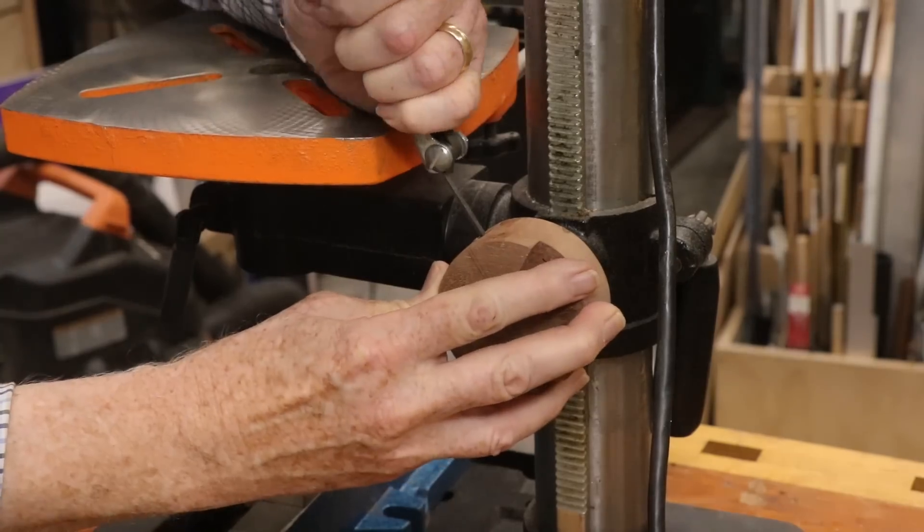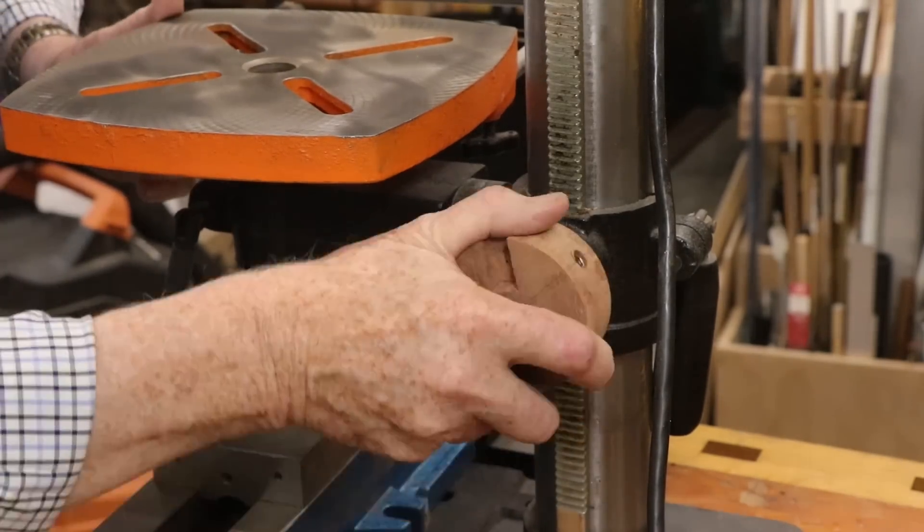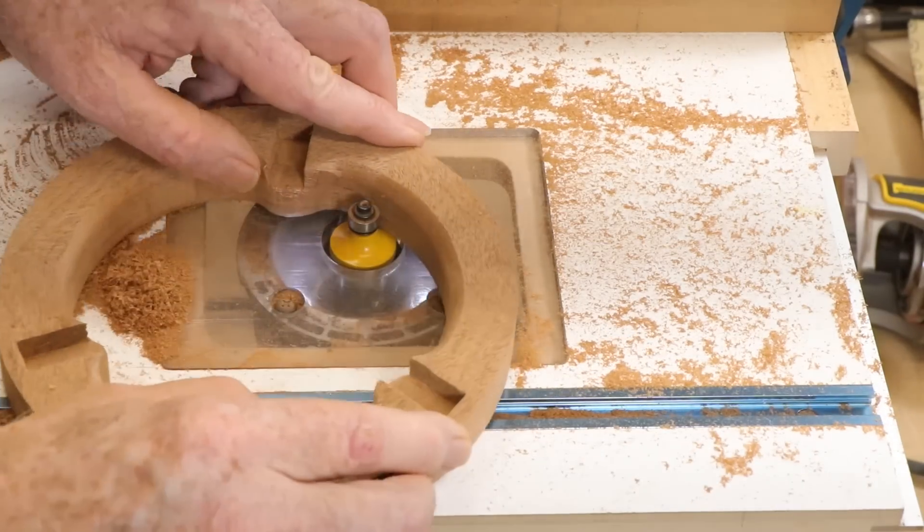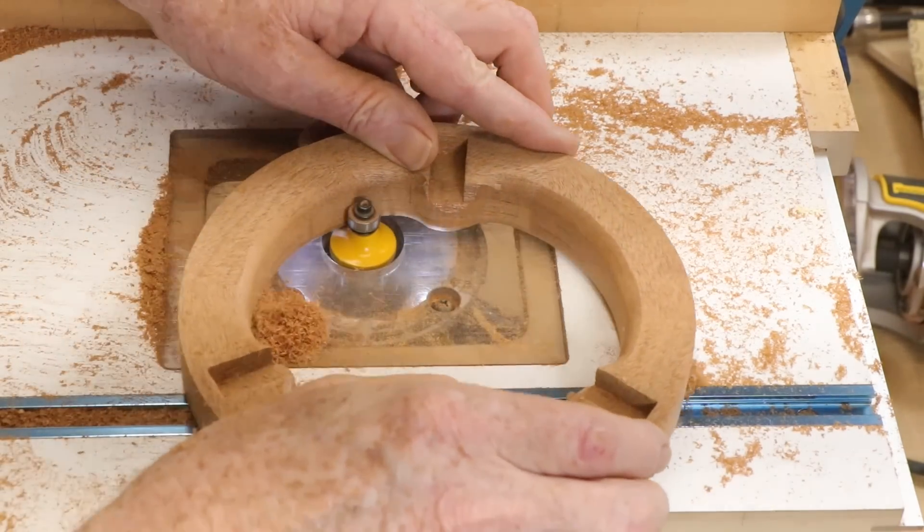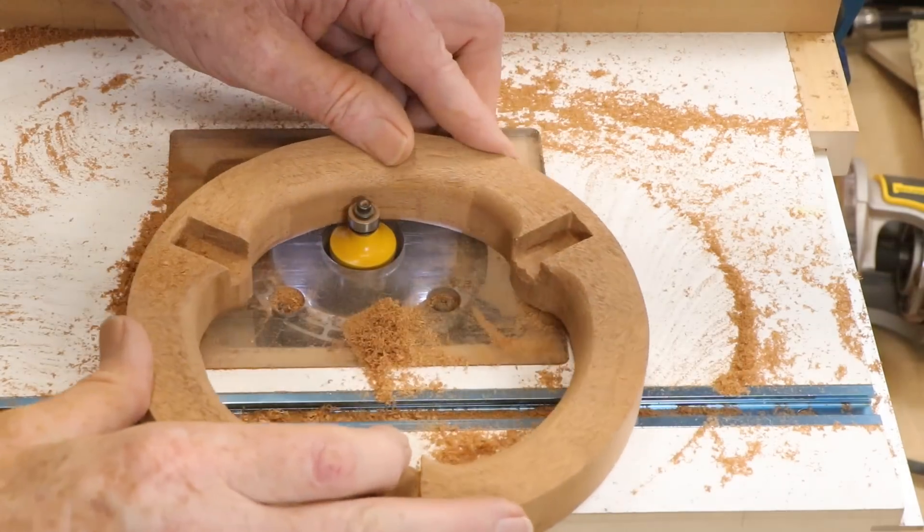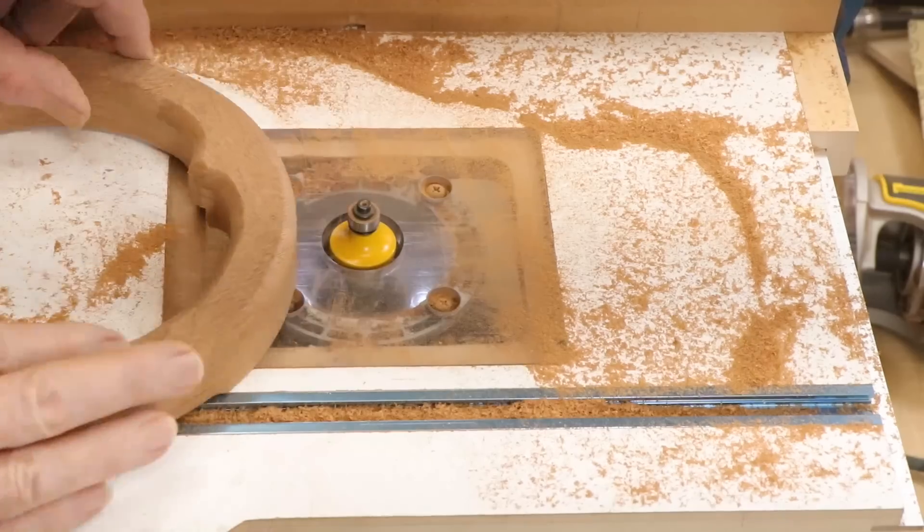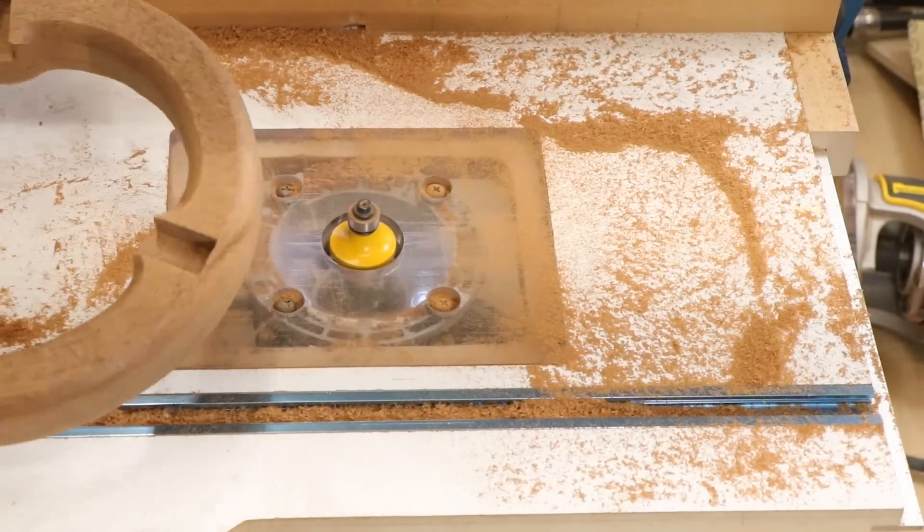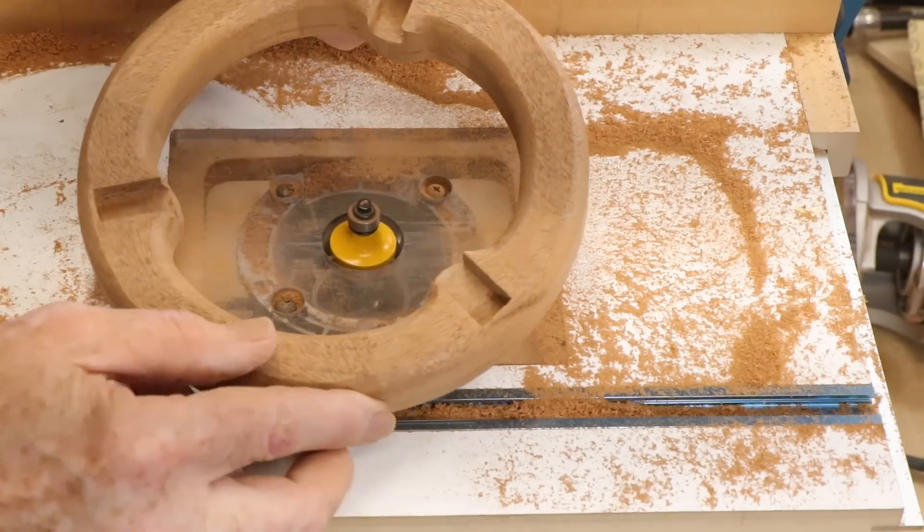A round-over bit on a trim router gives about the right profile for a wheel that feels comfortable in my hand. I'm not trying to make it fully round. I cut the corners away in several shallow passes to reduce the risk of tear-out.